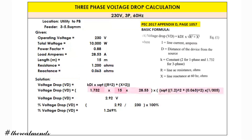After using your calculator, you can arrive at an answer of 2.92 volts. To get the percentage, simply divide 2.92 by 230 and multiply by 100. The voltage drop percentage is 1.269 percent. Notice that this is less than 2 percent, which means the conductor we used is within the 2 percent allowable voltage drop based on PEC provisions.